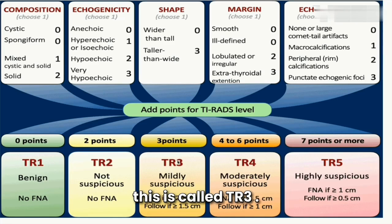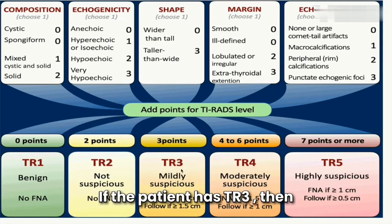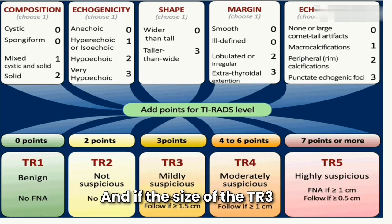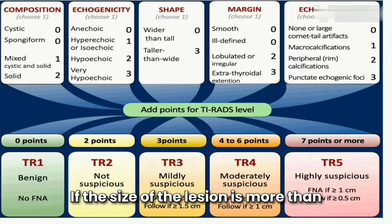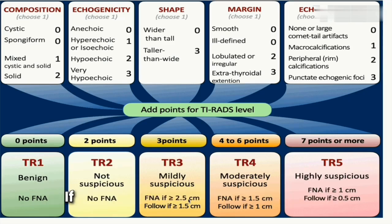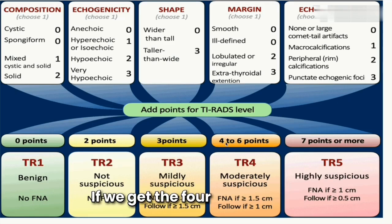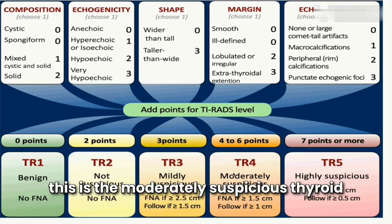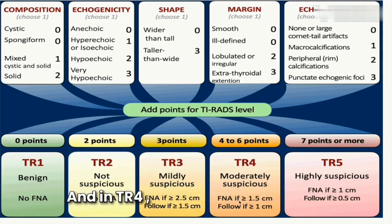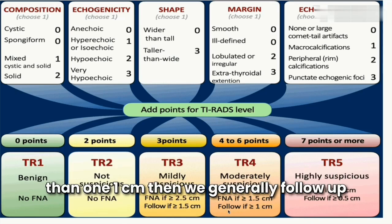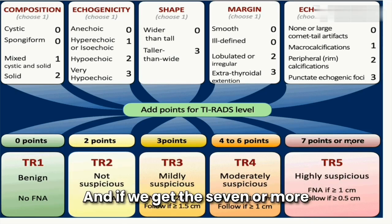If we get three points, this is TR3 — a mildly suspicious thyroid lesion. For TR3, if the lesion size is more than 2.5 cm, we perform FNAC; if less than 2.5 cm, we follow up. If the total is four to six points, this is TR4 — moderately suspicious. For TR4, if the size is more than 1.5 cm we do FNAC, and if more than 1 cm we generally follow up.